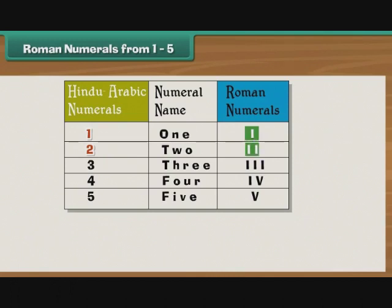Similarly, as 3 is 1 plus 1 plus 1, it is written as 3 I's. 4 and 5 are written slightly differently as IV and V. As you have seen, V represents the numeral 5.